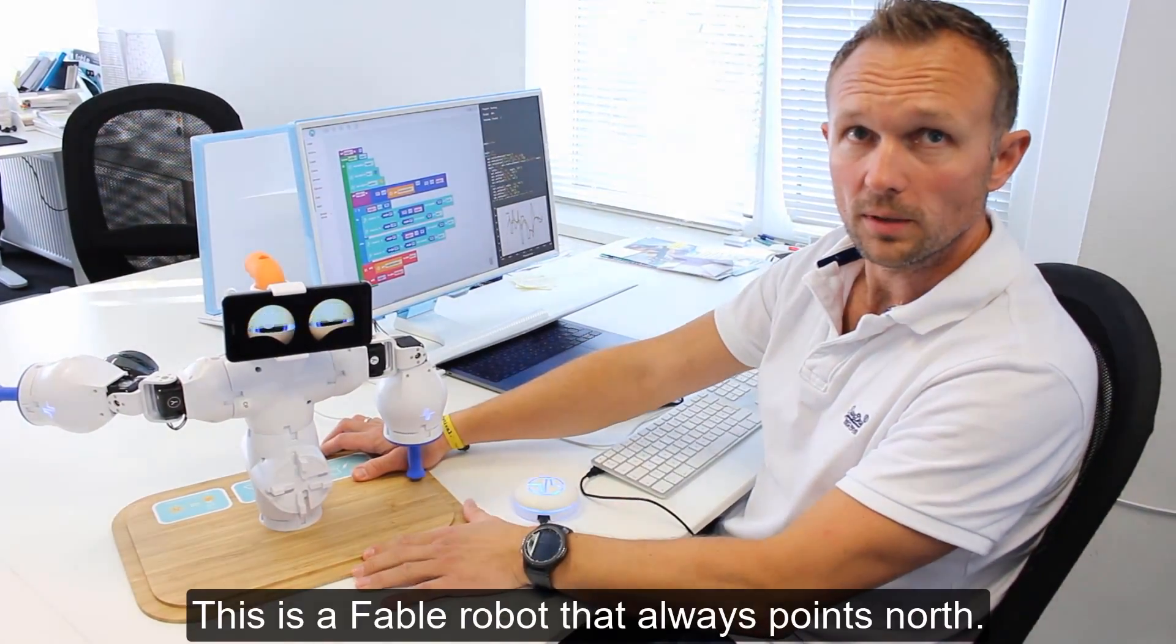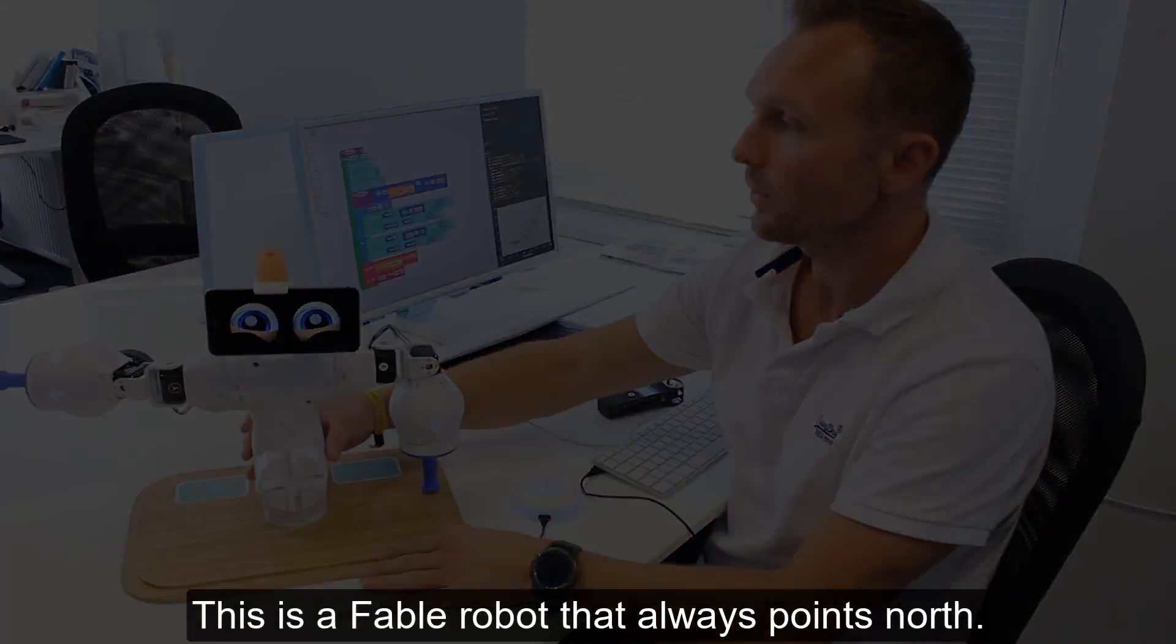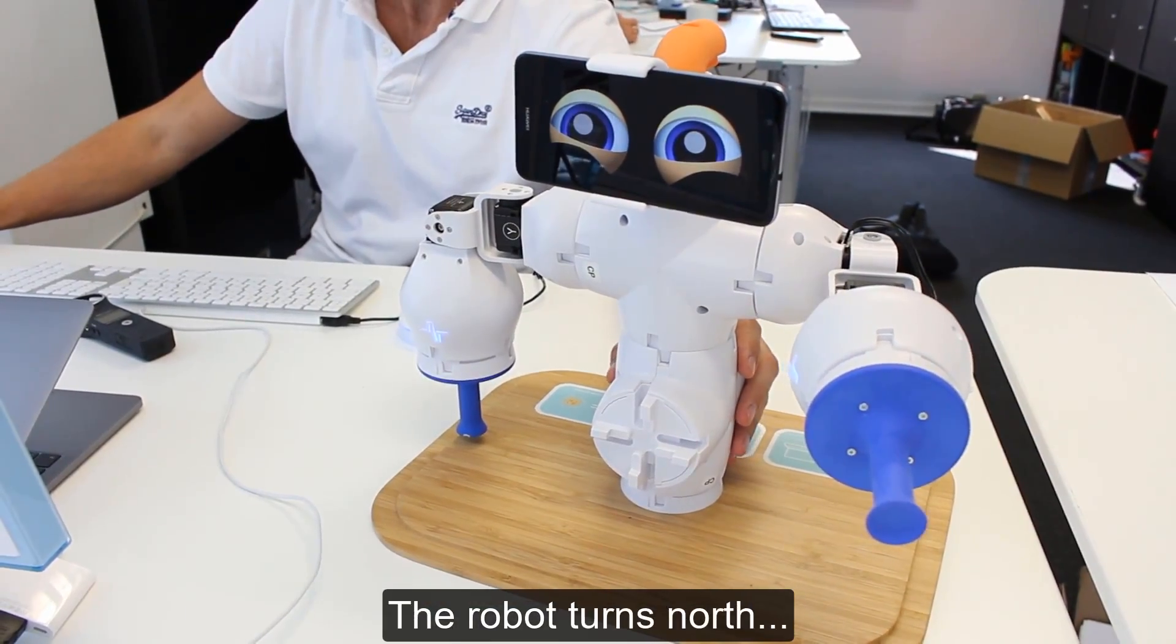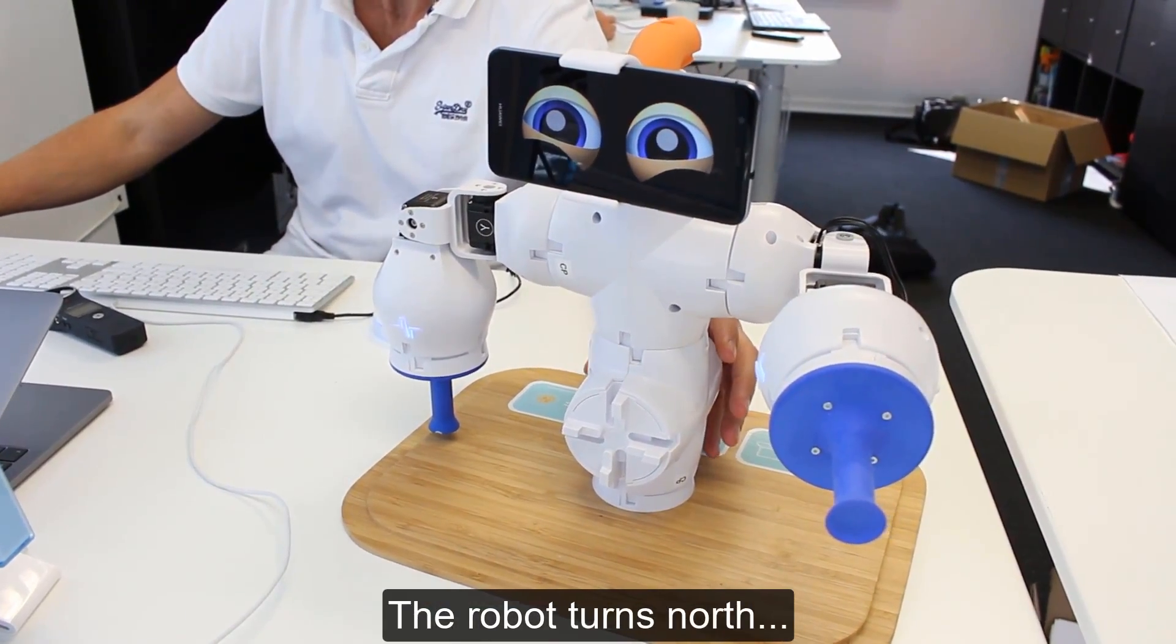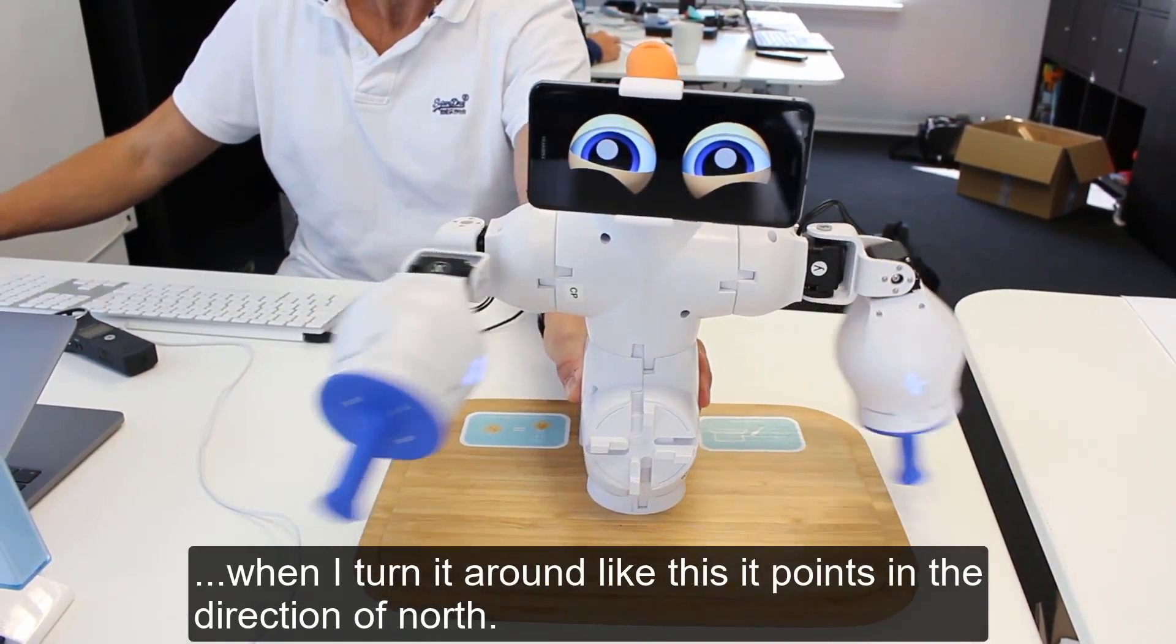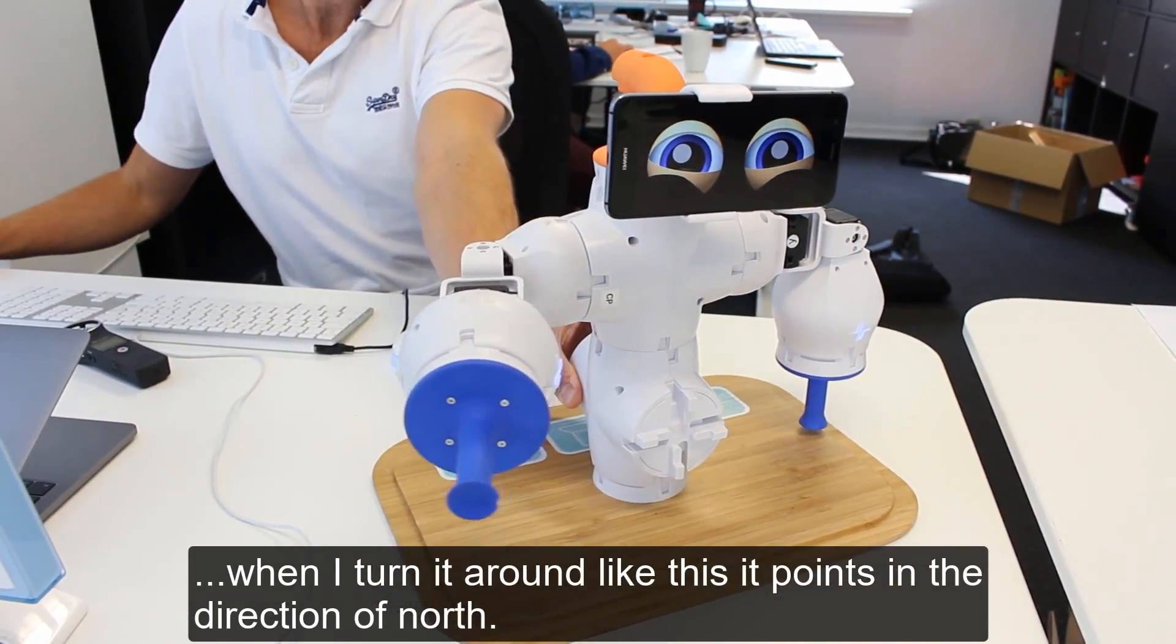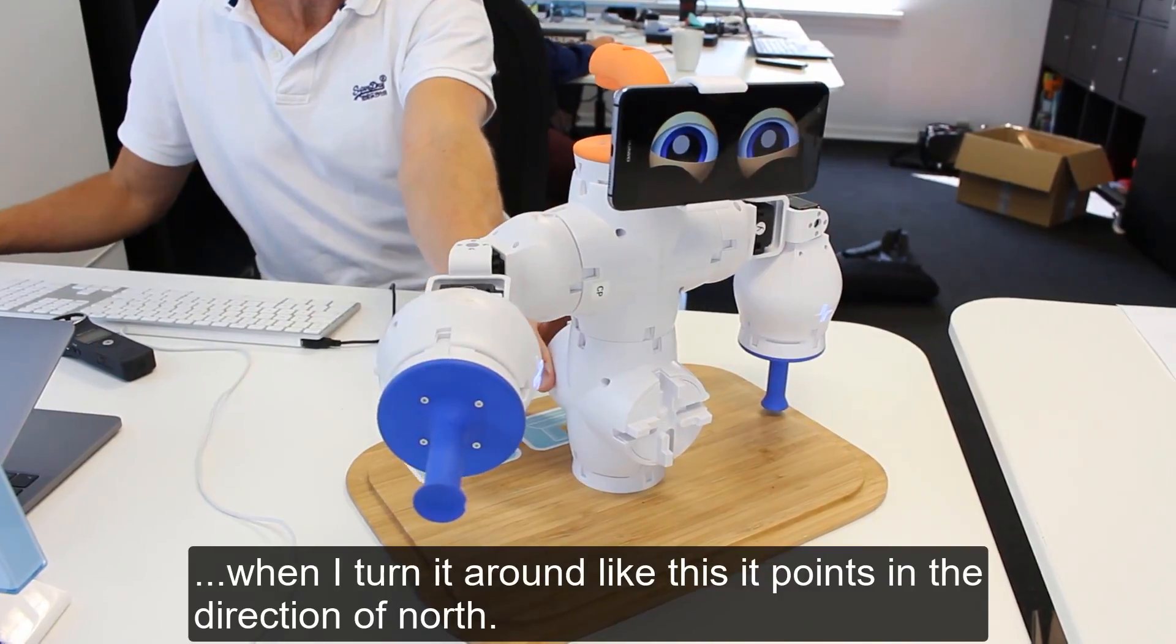This is a Fable robot that always points north. The robot turns north. When I turn it around like this, it points in the direction of north.